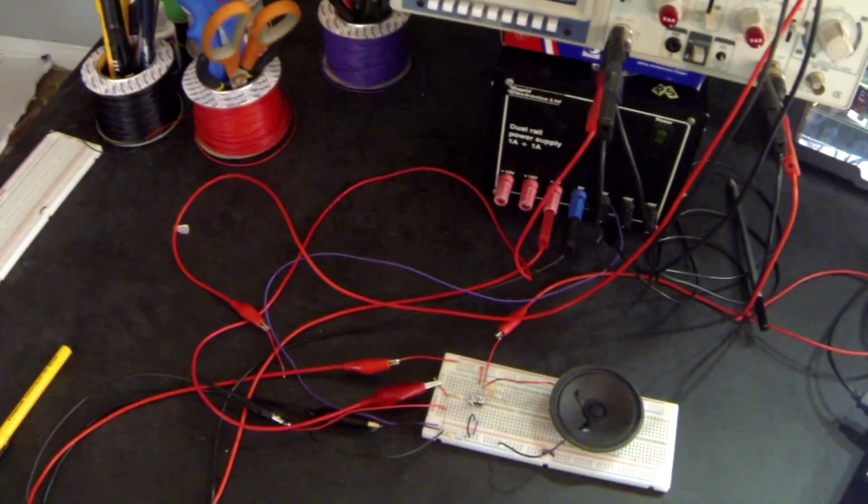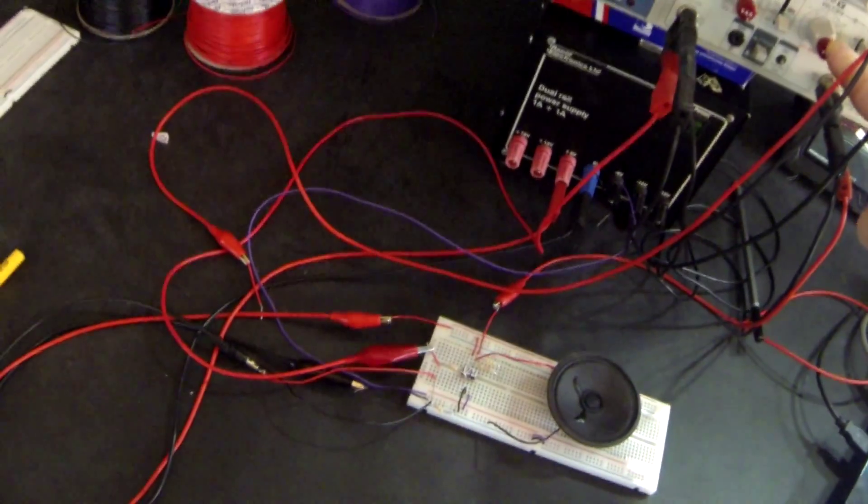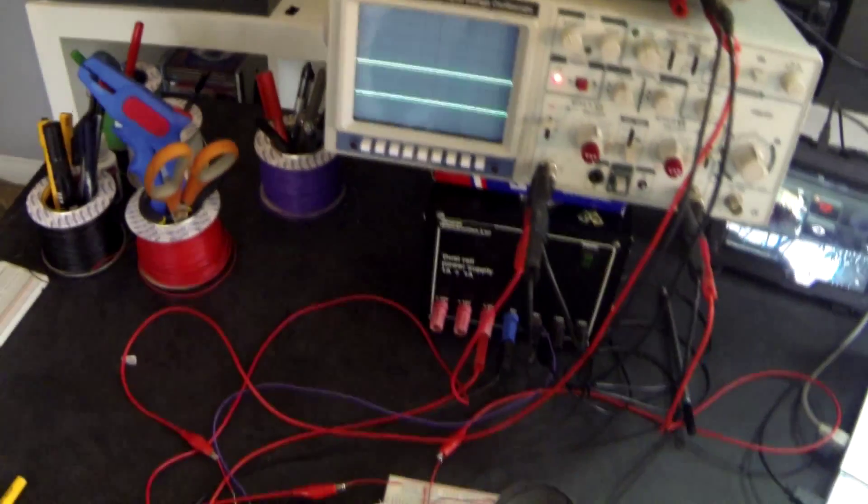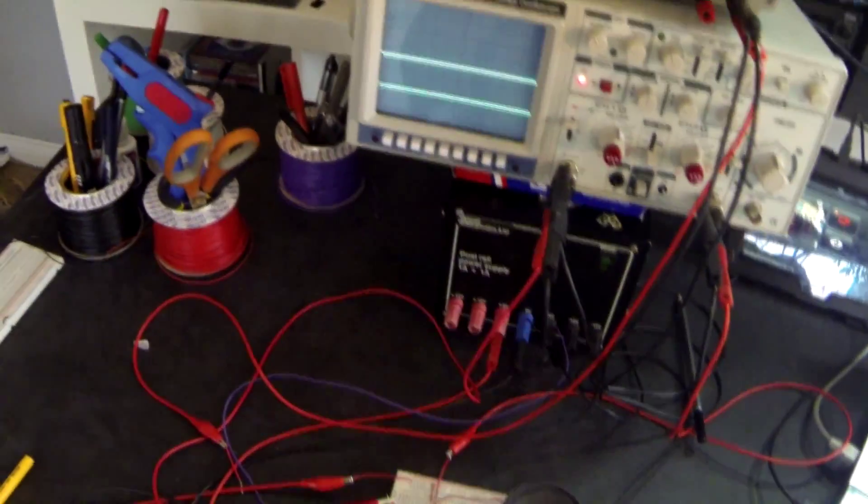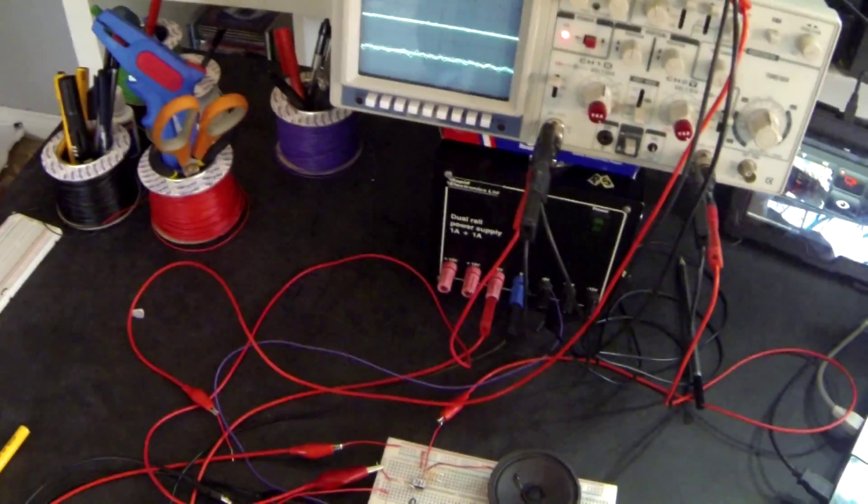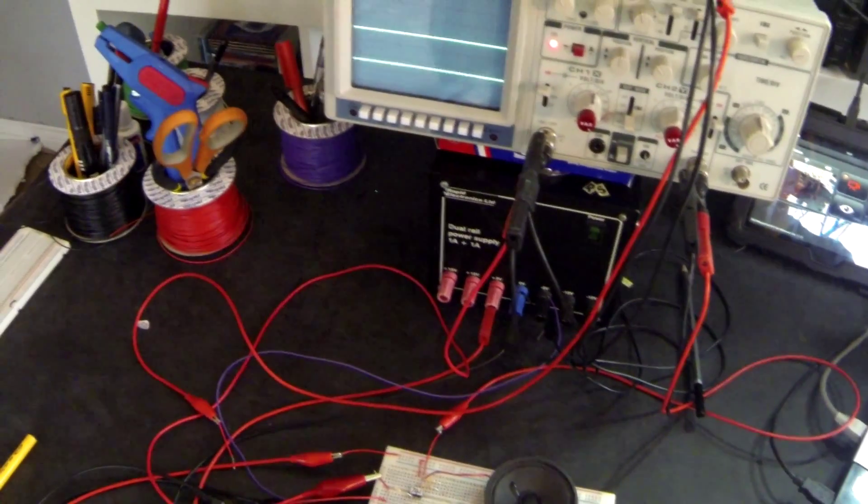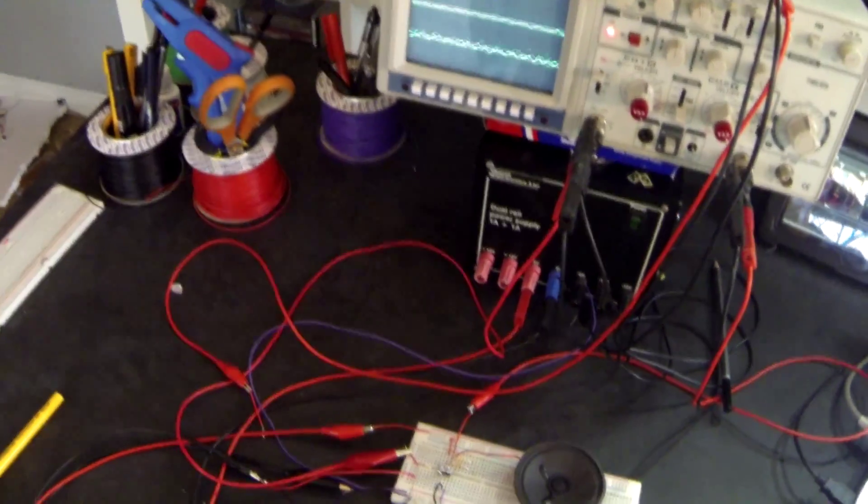And you can see that the output waveform is quite clearly amplified because the output is on one volt per division and the input is on 0.1 of a volt per division. So in other words, the input and output are different by a factor of 10 where the output is reduced by 10 on this. But obviously my amplifier is working.